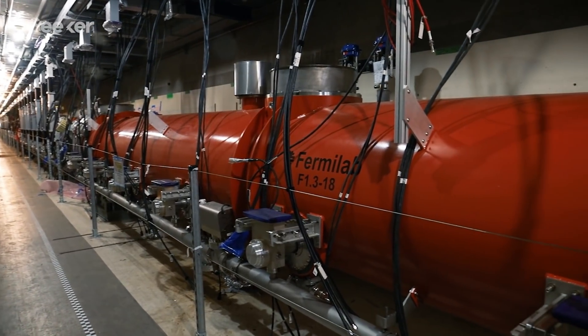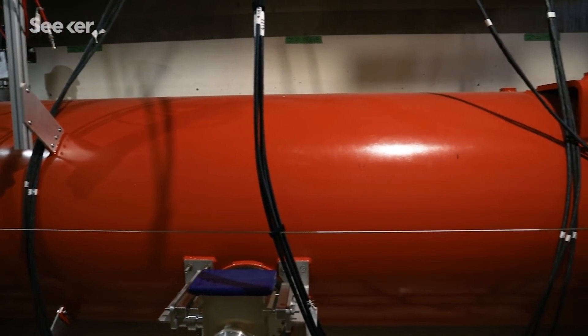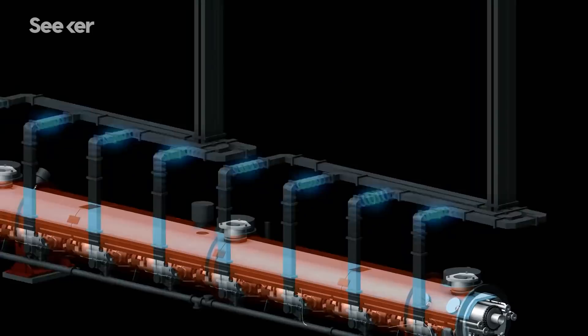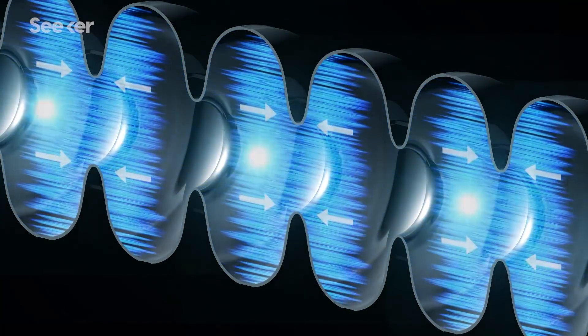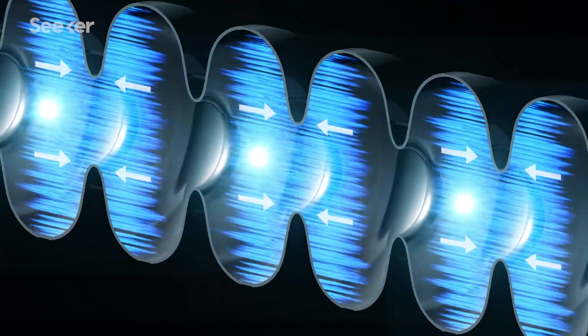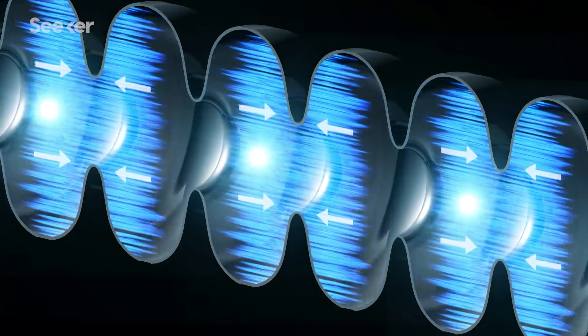This ultracool upgrade is a big change for the LCLS, which uses a copper accelerator and operates at room temperature. Superconductors, when you cool them down cold enough, they have no electrical resistance, so they don't heat up at all. So since you're not heating your structure up, you can run it continuously. So in our case, this allows us to make the jump from 120 pulses per second up to a million pulses per second.